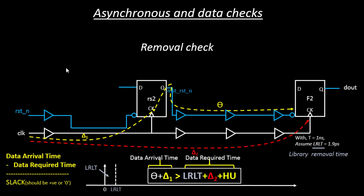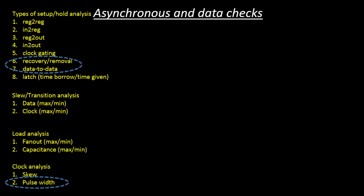That covers recovery and removal checks, which form one section of asynchronous checks. There's another section of asynchronous checks which is the pulse width check. But before that, we'll look into data-to-data checks in the next video. Data-to-data checks are very similar to setup and hold checks, only they happen on the data pins. Thank you.